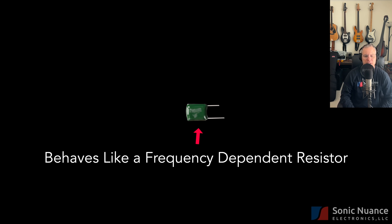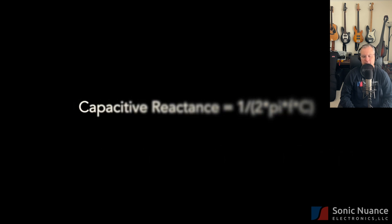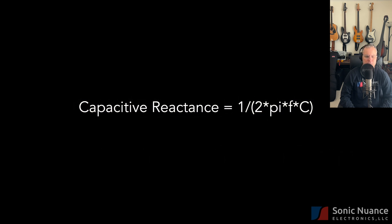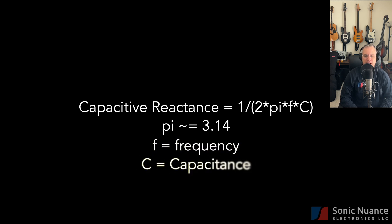In fact, reactance is measured in ohms just like resistance is for a resistor. Reactance is defined by the equation 1 over 2 pi times F times C, where pi is 3.14 approximately, and F is the frequency in hertz. C is the capacitance in farads.